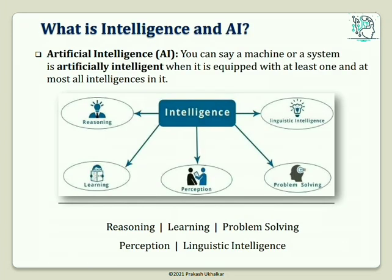Let us look at what intelligence is and why it is important in AI. You can call a machine or system artificially intelligent when it is equipped with at least one, and at most all, intelligences. Intelligence is tangible and is composed of reasoning, learning, problem solving, perception, and linguistic intelligence.